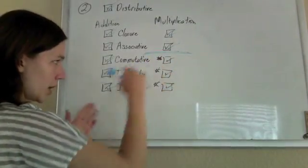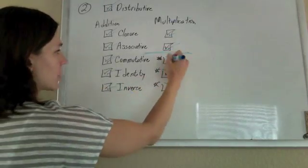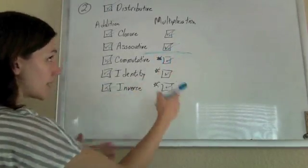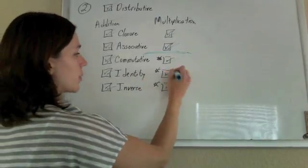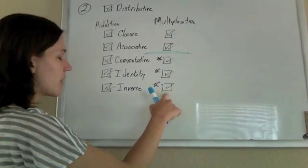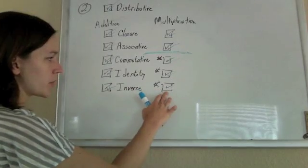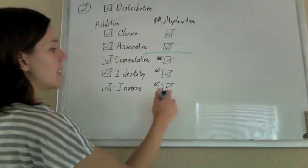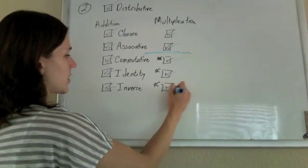So, commutative, integers are totally commutative, nothing funky there. Identity, fine, the identity property is one. Inverse, though. This is where a lot of things fail, is at this multiplicative inverse. And it's not satisfying this one down here.